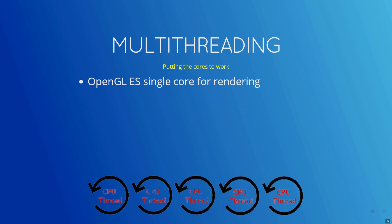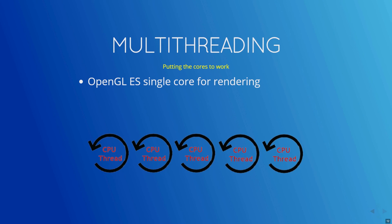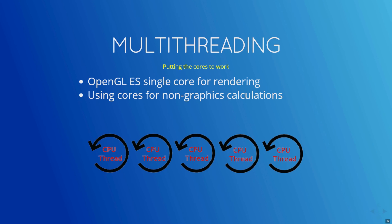Multi-threading allows applications to take advantage of the multi-cores available on hardware. In OpenGL ES, multi-threading support was non-existent, though you could thread out non-graphics frame calculations like physics, frustum culling, and animation. However, the rendering process was left to the graphics driver on a single thread.